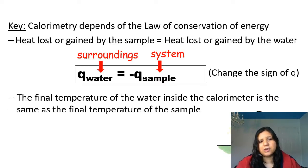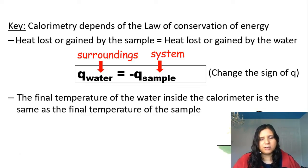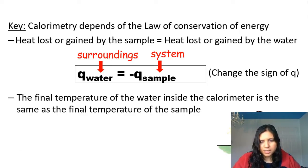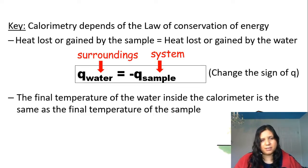The final temperature of the water inside the calorimeter is the same as the final temperature of the sample. When we put something inside the calorimeter, the water molecules and sample molecules bump into each other and eventually reach equilibrium where they're moving at the same speed and have the same temperature. The final temperature of the water surroundings equals the final temperature of the sample system.